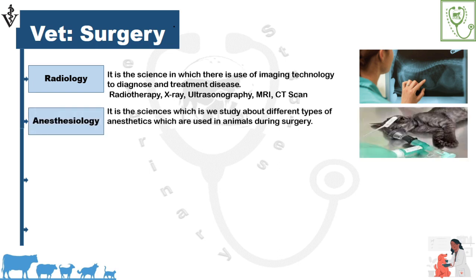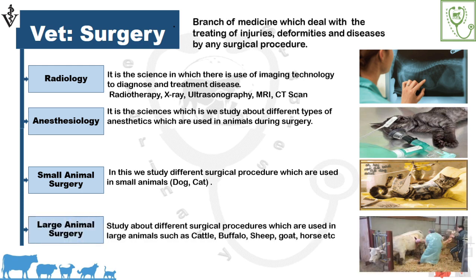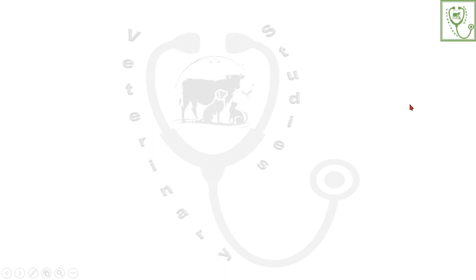Anesthesiology is the science in which we study about the different types of anesthetics used in animals during surgery. Small animal surgery covers the surgical procedures used in small animals such as dogs and cats. Large animal surgery covers the different surgical procedures used in large animals such as cattle, buffalo, sheep, goat, and horse. This concludes today's lecture.